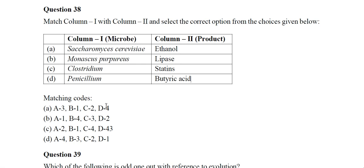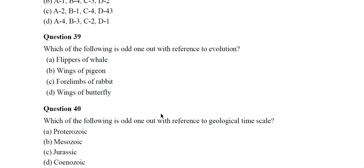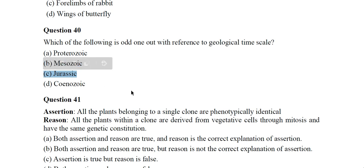Question 39: Which of the following is the odd one out with reference to evolution? The correct answer is four limbs of rabbit, option C. Question 40: Which is the odd one out with reference to the geological time scale? Jurassic is the odd one out because Jurassic is a period, not an era — all others are eras.